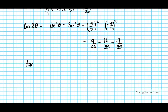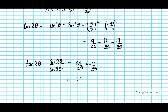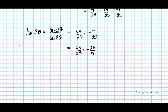For tan 2θ, using the quotient identity: tan 2θ = sine 2θ / cosine 2θ = (24/25) ÷ (−7/25). Multiplying by the reciprocal: (24/25) × (−25/7). Note that reciprocation does not alter the sign. The 25s cancel, giving tan 2θ = −24/7.